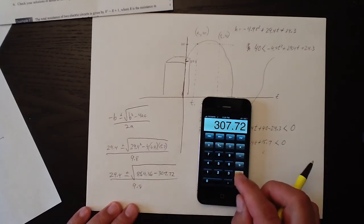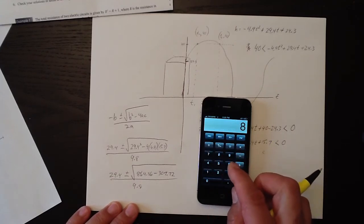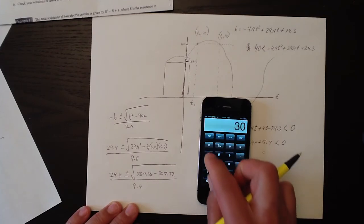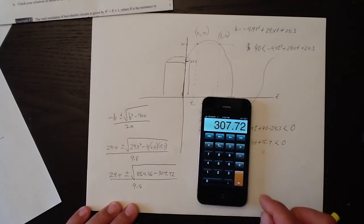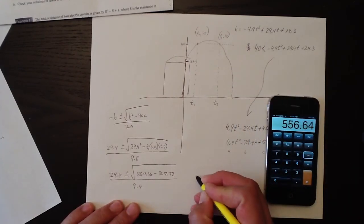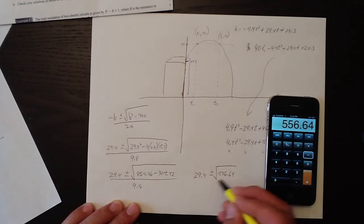So if I take that, let's see, clear that. So 864.36 minus 307.72 equals that. And I need the square root of that. And this calculator doesn't have a square root function.